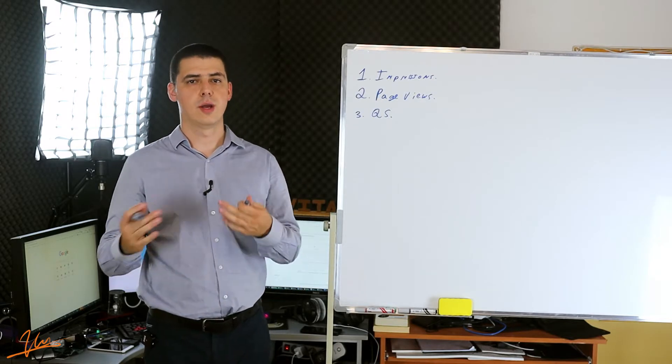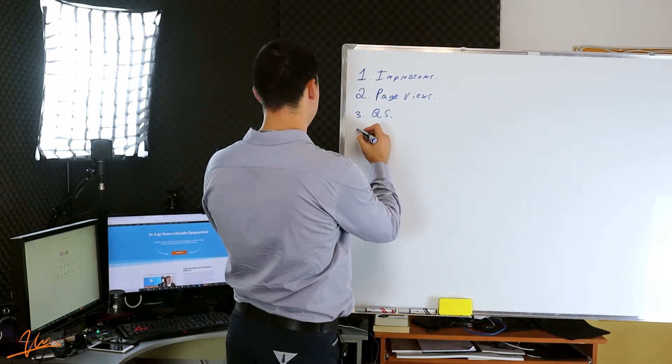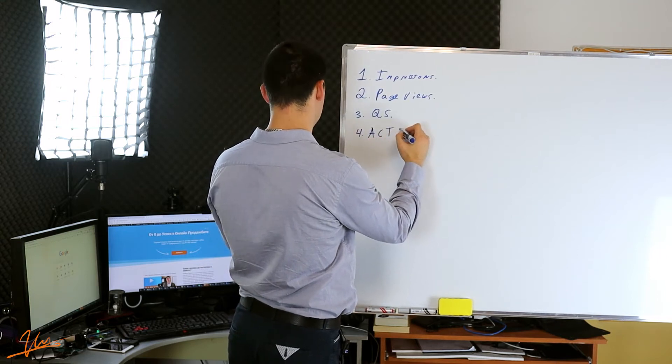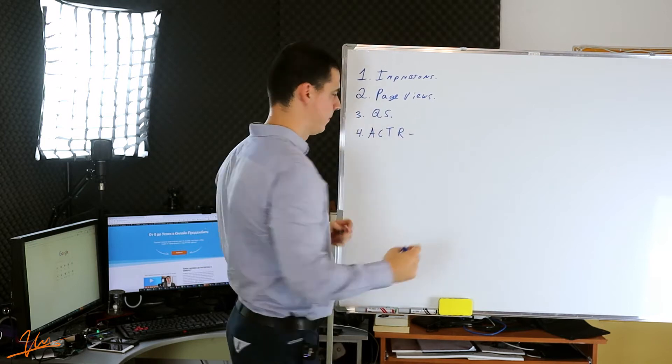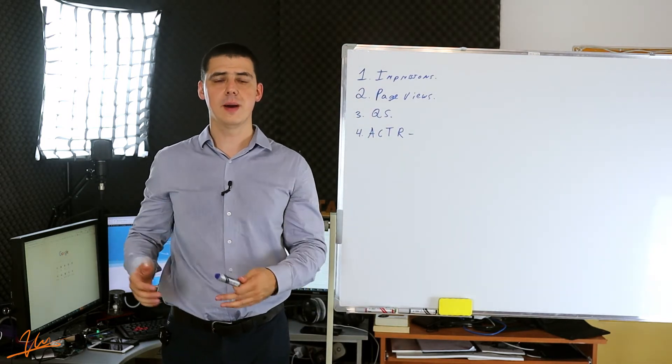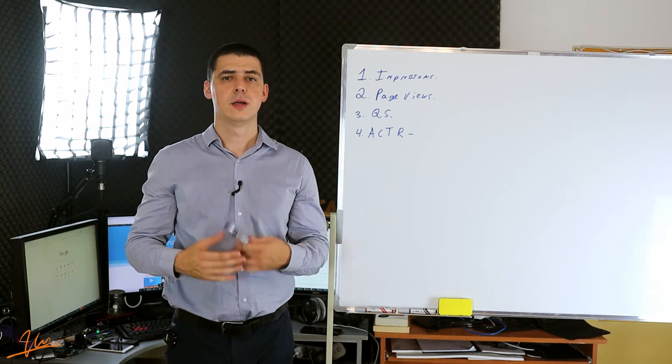The next metric is average click-through ratio and it's in percents. This shows you exactly page views divided by the number of impressions.